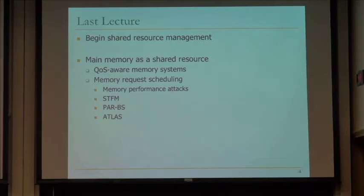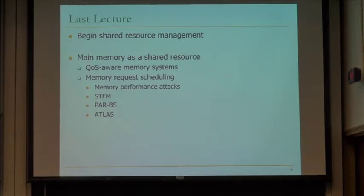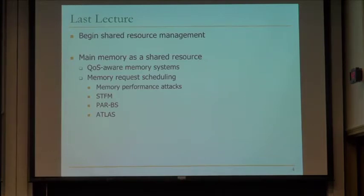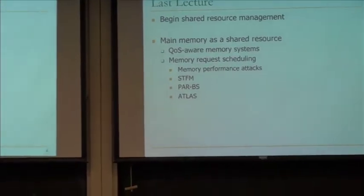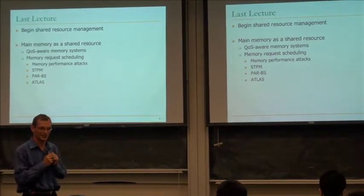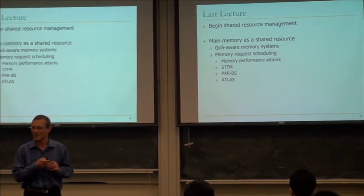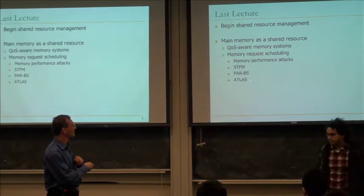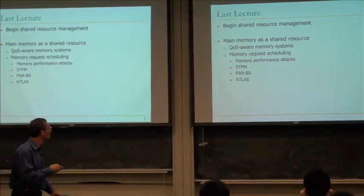Last lecture, we started shared resource management more formally. You had seen caches as a shared resource earlier with utility-based cache partitioning, for example. But we mainly focused on main memory as a shared resource. Arguably, this is a harder-to-handle shared resource because you don't have enough pins going off chip. Even if you consider other technologies like 3D stacked DRAM, there's still a shared resource there, because you cannot scale the number of pins as fast as you can scale the number of cores. That seems to be a fundamental problem today. I'll cover some of these very quickly so we can get up to speed for today's schedulers.